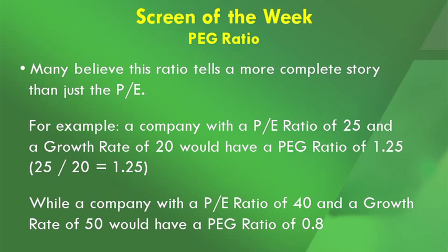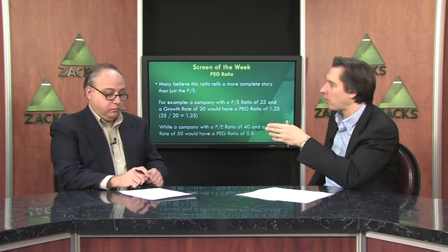A lot of people believe that this ratio tells a more complete picture than the PE ratio alone. For example, a company with a PE ratio of 25 and a growth rate of 20 would have a PEG ratio of 1.25 — that's 25 divided by 20. But a company with a PE ratio of 40 and a growth rate of 50 would have a PEG ratio of 0.8. Based on this metric, the company with a PE ratio of 40 would actually be considered a better bargain than the company with a PE ratio of 25.